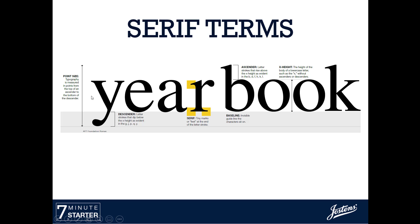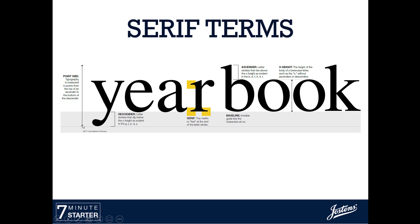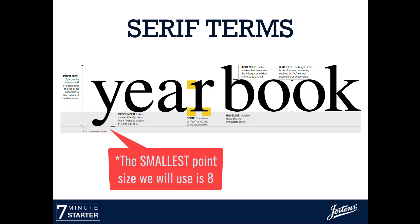We also talked about point size. Point size is the overall measurement from the top to the bottom of the text. 72 points equals 1 inch, so if you have a font size of 72, that would equal 1 inch printed out on the page. The lowest font size we want to go to is size 8 font in our book.